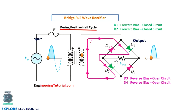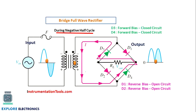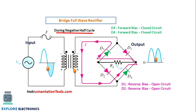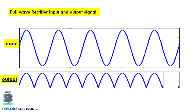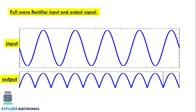The output of the bridge rectifier is the same as that of the center-tapped full wave rectifier. Both the center-tap and bridge rectifier outputs are of the same kind — a full wave pulsating DC with positive half cycles for both the positive and negative input cycles.